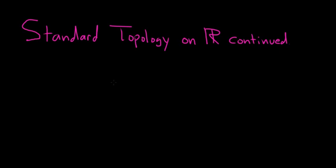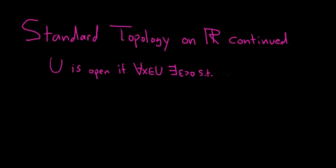Hey, YouTube. In this video, we're going to continue our discussion on what we're calling the standard topology on the set of real numbers. Recall that we defined open sets as follows: U is open in this topology if for all x in U, we can find some epsilon greater than 0 such that there is a neighborhood around x that is entirely contained in U. Let's look at some more examples of sets in this topology.